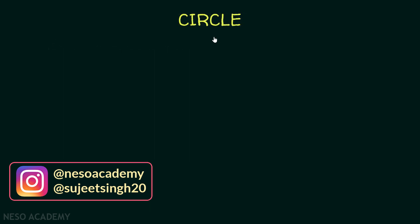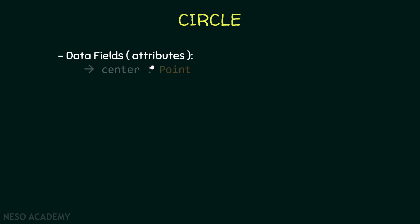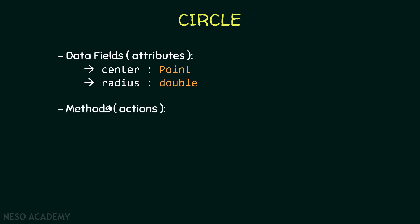Let's get started. Suppose that we want to create a class to be able to create objects that represent a circle in real life. This circle should have a center which is a Point, and also a radius which is a double. These are the data fields we will define in the Circle class.